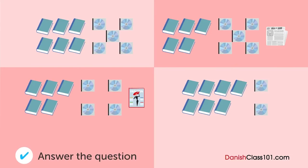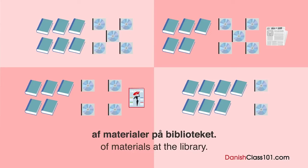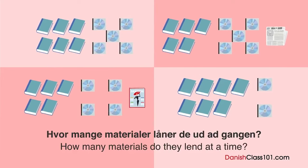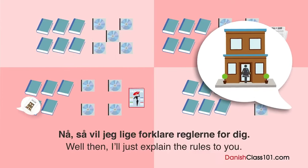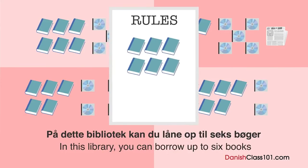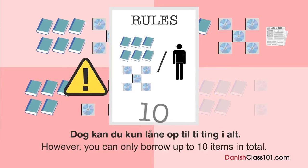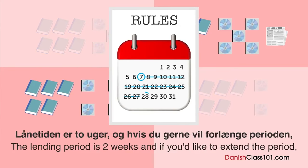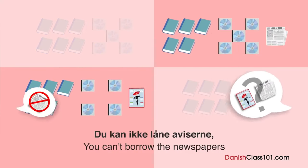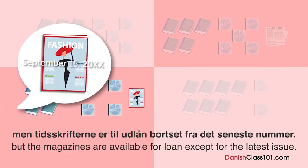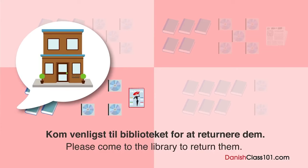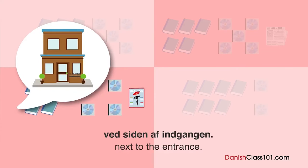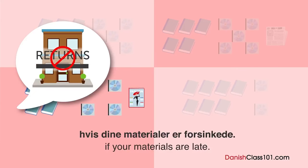Hvor mange materialer låner de ud ad gangen? En kvinde spørger til udlånssystemet på biblioteket. Kan du vise mig hvordan man låner bøger? Er det første gang du bruger dette bibliotek? Ja. På dette bibliotek kan du låne op til seks bøger og fem CD'er eller DVD'er per person, dog op til ti ting i alt. Lånetiden er to uger - forlæng perioden før den udløber. Du kan ikke låne aviserne, men tidsskrifterne er til udlån bortset fra det seneste nummer. Vi kan ikke acceptere dem tilbage med posten - kom til biblioteket. Efter lukketid kan du lægge dem i afleveringsboksen ved siden af indgangen. Lad være med at bruge afleveringsboksen hvis dine materialer er forsinkede.